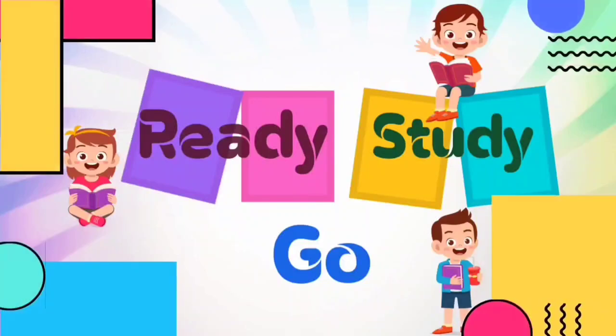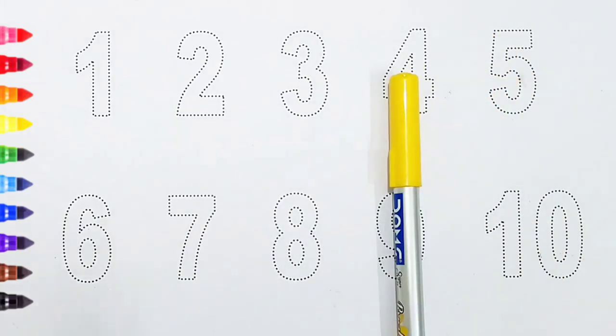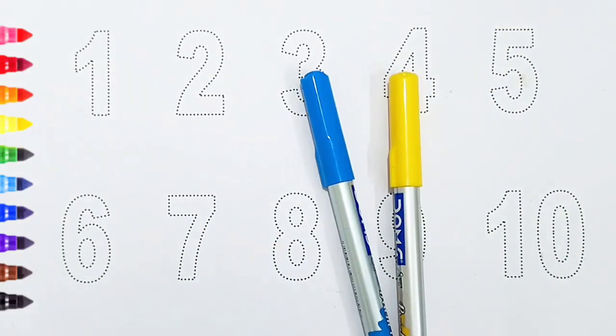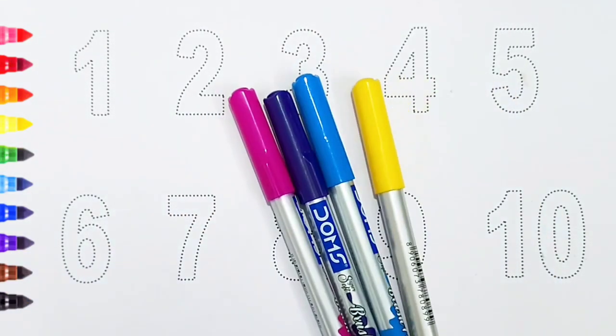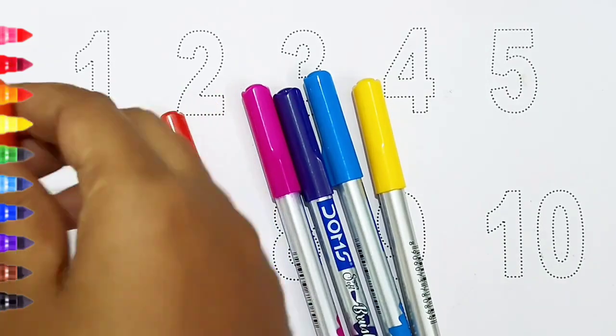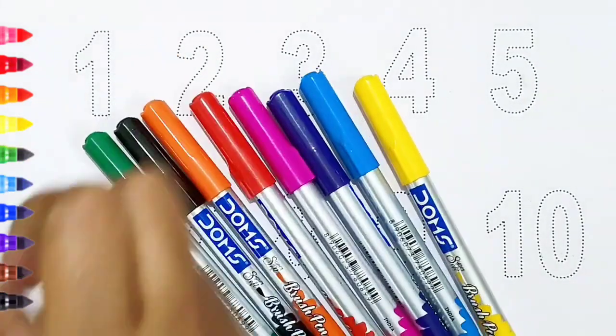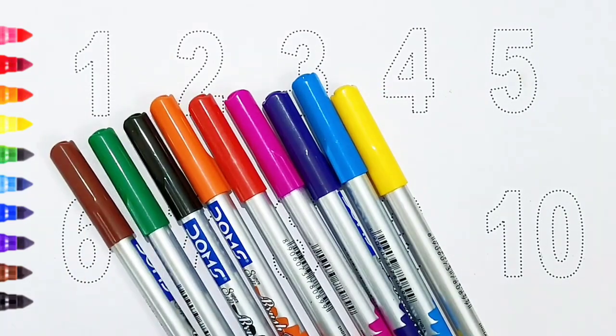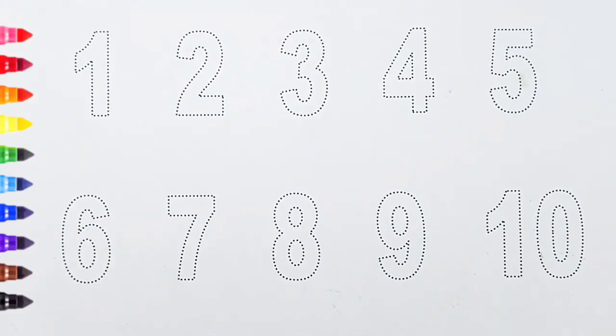Ready, study, go! Hi kids. Yellow color, blue color, violet color, pink color, red color, orange color, black color, green color, brown color. Hi kids, today we can learn the numbers from one to ten.